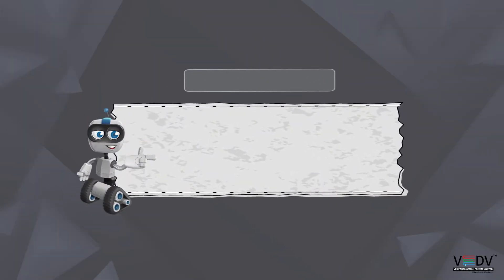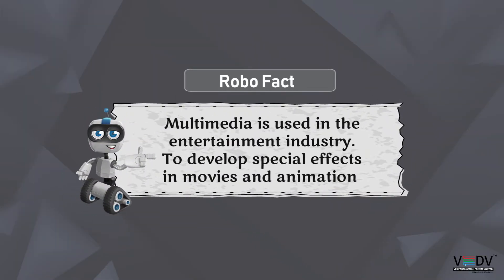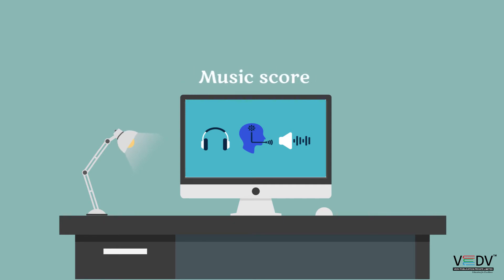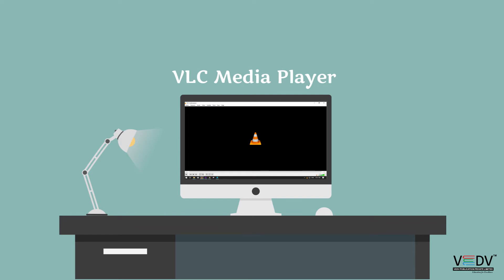Robo Fact: Multimedia का use entertainment में भी किया जाता है — movies और animation में special effects develop करने के लिए। Audio: Audio vibrations के द्वारा produce होती है जिसे sense of hearing से identify किया जाता है। Multimedia में audio speech, sound effects, और music score के form में भी आती है। Example: VLC Media Player, Windows Media Player.